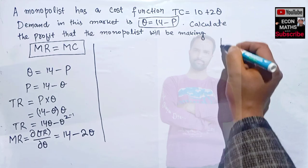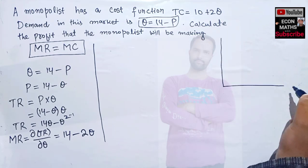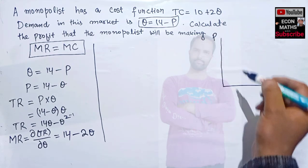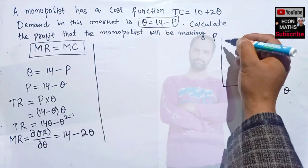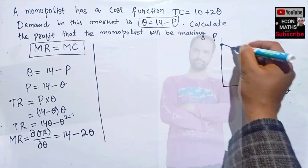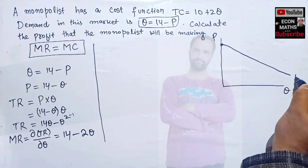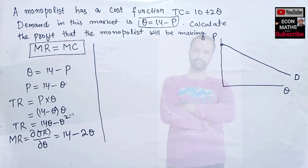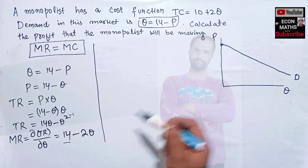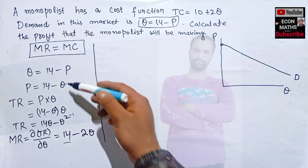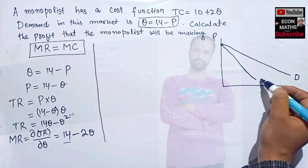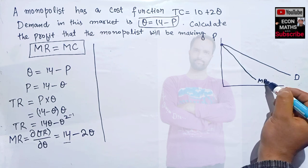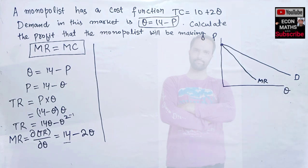Drawing this graphically: on the quantity axis and price axis, the demand function has a vertical intercept of 14. This is our demand function, also the average revenue function. The marginal revenue function has the same intercept of 14 but a slope twice that of the demand curve. This is our marginal revenue.